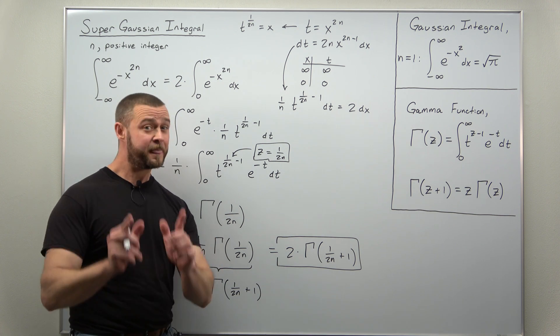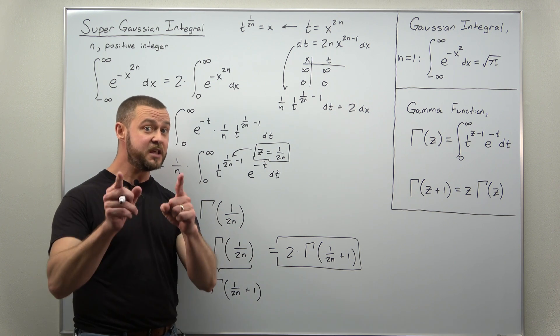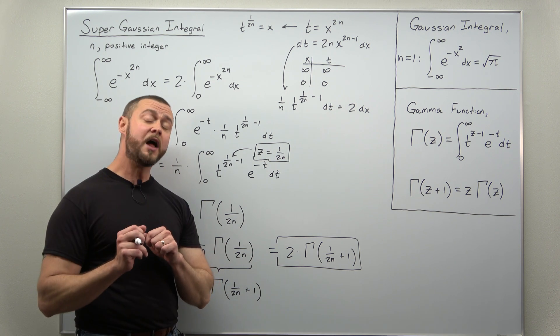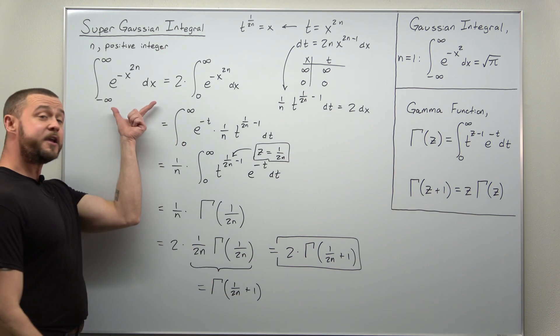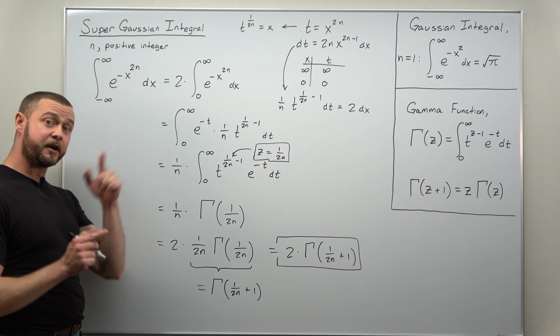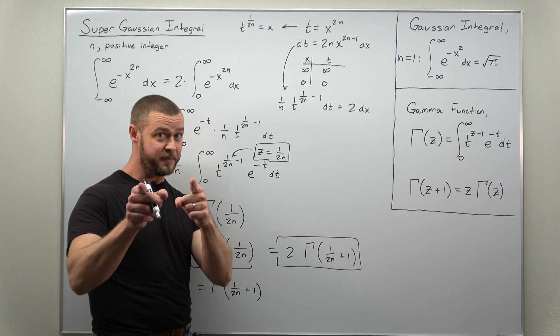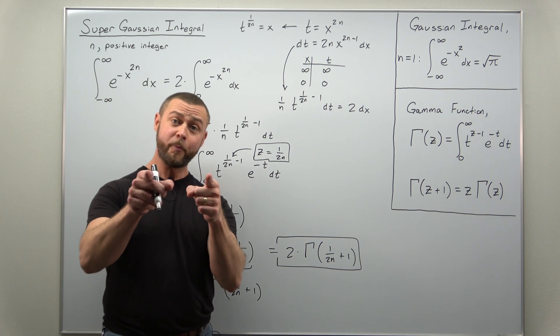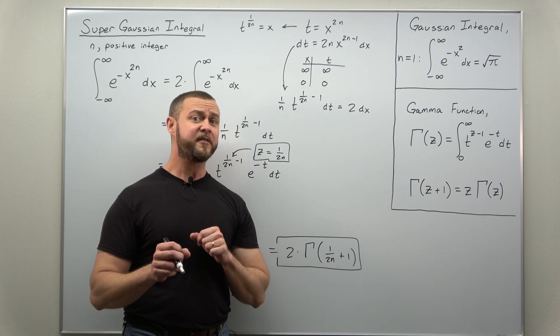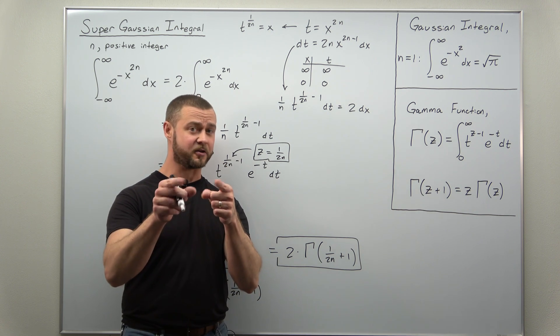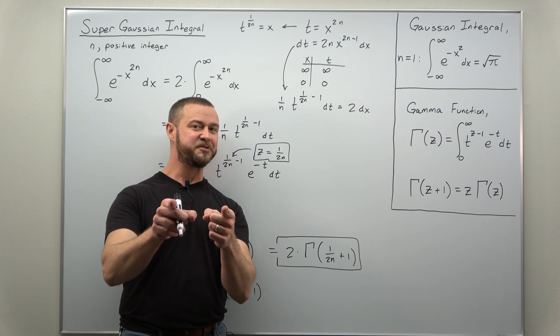Now, unfortunately, this is not going to come out to be a nice exact value. But the gamma function is well known, and there's a lot of nice values for it with very accurate decimal values. So here, the super Gaussian integral, we can rewrite it in terms of the gamma function. And there we go. Hope you enjoyed this problem in our series, The Art of Integration, where we're all about creative problem-solving methods for integrals. If you enjoyed the content, support the channel, like, and subscribe.